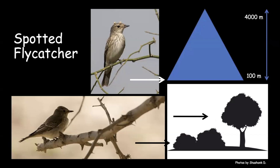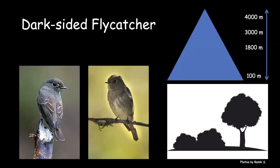Now the dark-sided flycatcher: if you have gone birding in the Himalayas in summer months, you'll find this bird sitting right next to the roadside. If you bird inside the forest you may not see it, but as soon as you are on the road or near road cuttings, you will definitely find a dark-sided flycatcher sitting there. One of the main features is a very pale belly in the middle — otherwise it is a dark-colored bird.